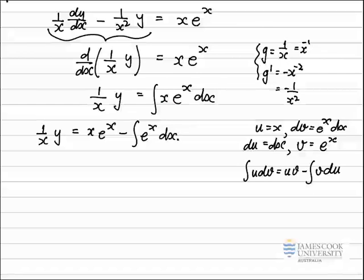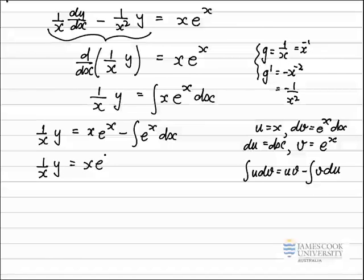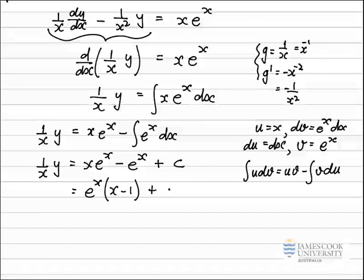We check that integration by parts has transformed a difficult integral — a product — into a standard integral, e to the x, which we can integrate directly. Doing that last integral, the left-hand side stays as (1/x)y, and we get x e to the x minus e to the x, adding all arbitrary constants together into a single constant c. We can simplify this by factoring out e to the x to give (x minus 1), plus c.